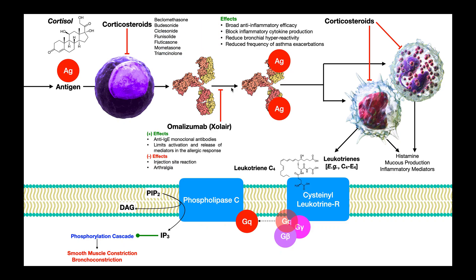The next class of drugs are the anti-IgE drugs. There's really one main one: Xolair. These drugs are inhibitory on the IgE antibodies — they get in the way of where the antigen would normally bind and block the activation of the antibody. So the antigens don't bind, the antibody is not activated, and the antibody can't therefore activate eosinophils or macrophages. They limit the activation and release of mediators in the allergic response.